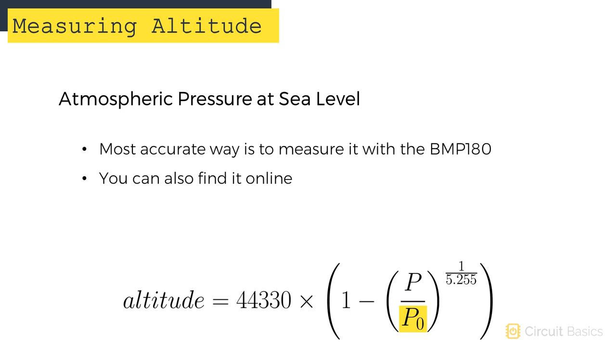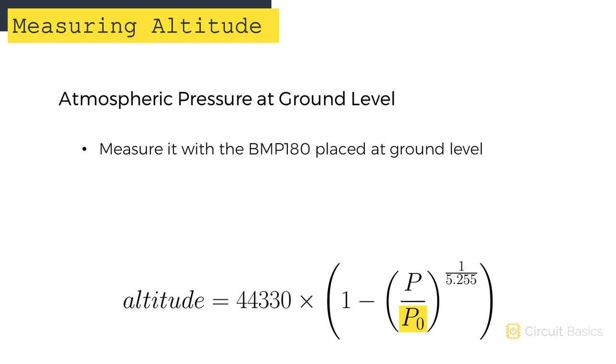The atmospheric pressure at sea level can be found a couple different ways. The most accurate way is to use the BMP180 to measure it, and I'll show you how to do that in a little bit. But you can also find maps online that will tell you the atmospheric pressure at sea level for your current location. The atmospheric pressure measured from ground can be found using the BMP180 pressure measurement taken at ground level. I'll show you how to do that too.